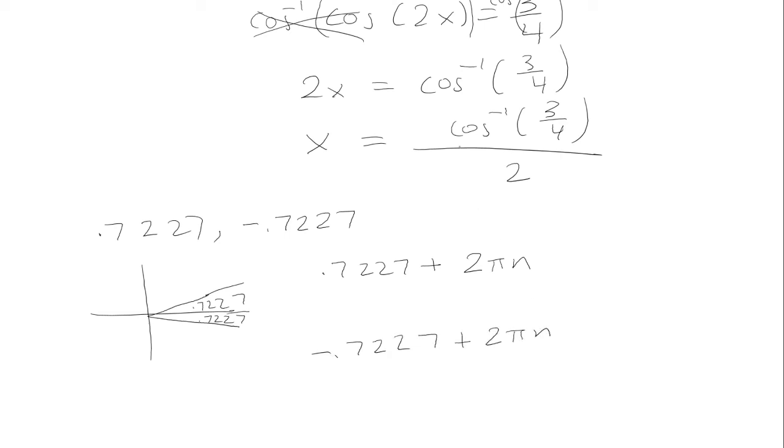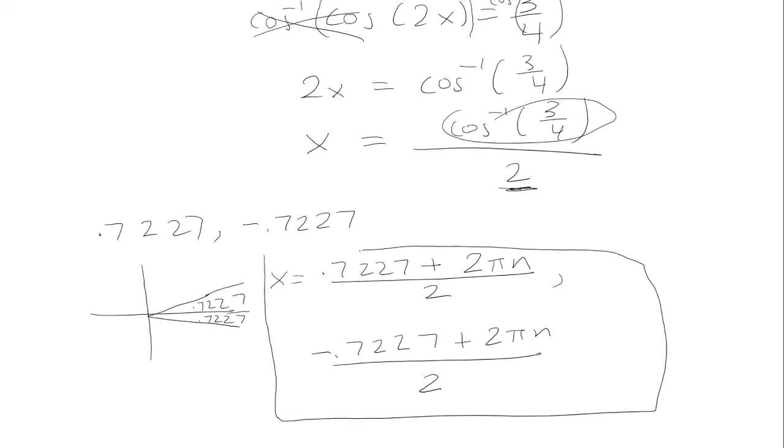So that's just the inverse cosine of 3 fourths. But now we have to divide by 2. Take these and divide them all by 2. And so we get these 2 as our solution. Keep in mind, this is infinitely many solutions because n here is an integer. The solution is going to have two forms.